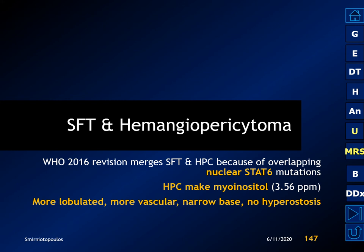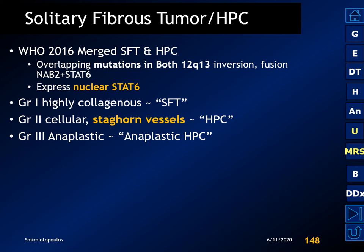Let's turn our attention to solitary fibrous tumor and hemangiopericytoma. These tumors were mistakenly described as malignant or aggressive meningiomas. The 2016 WHO classification merges solitary fibrous tumor and hemangiopericytoma because they have overlapping mutations in nuclear STAT6. Hemangiopericytomas make myoinositol, which is helpful on MR spectroscopy. They are more lobulated, more vascular, have a narrow base, and have no hyperostosis. Solitary fibrous tumors are grade 1; hemangiopericytomas are grade 2 or grade 3 anaplastic.